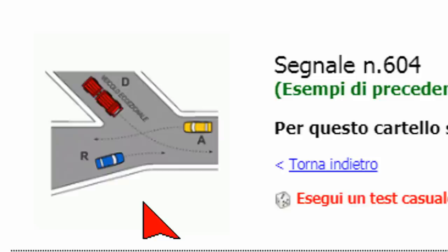Normalmente negli incroci in cui non ci sono segnali, semafori e neanche agenti preposti al controllo del traffico, chi ha la destra libera — cioè chi da destra alla guida del proprio veicolo non vede arrivare nessuno — è il veicolo che parte per primo e sgombera l'incrocio.